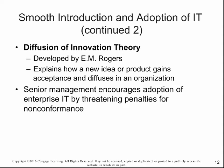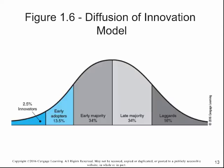Diffusion of Innovation, developed by Rogers, is illustrated in Figure 1.6. It explains who the innovators, early adopters, early majority, late majority, and laggards are, and the reasons why people fall into those categories.